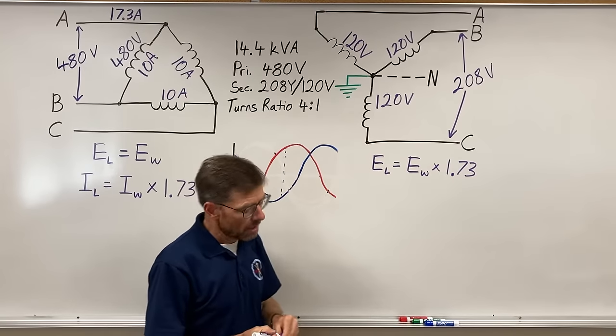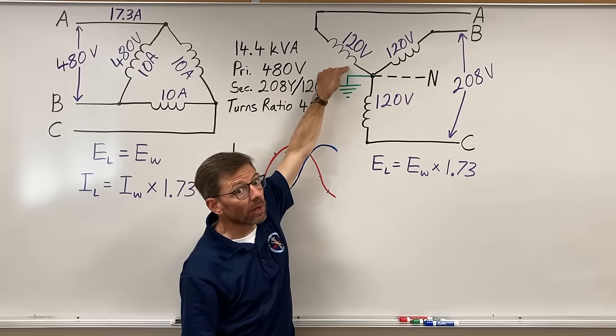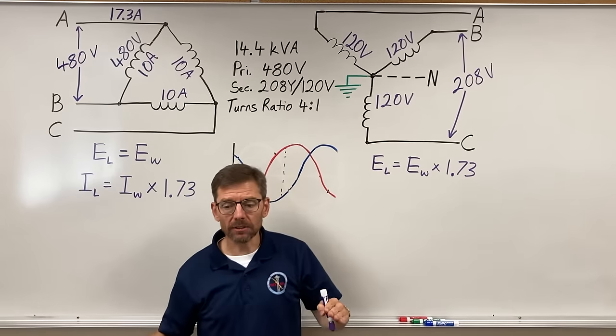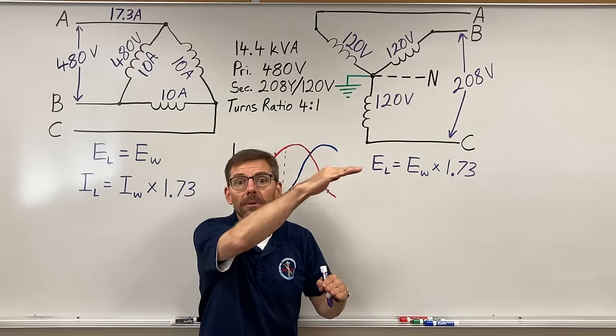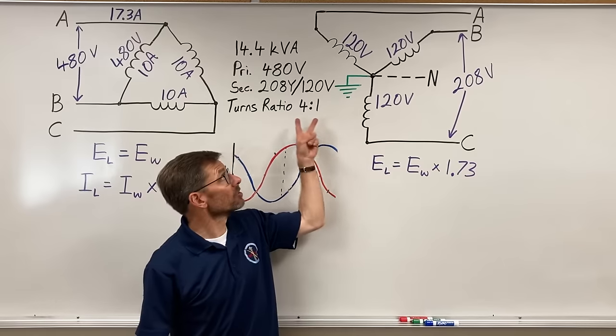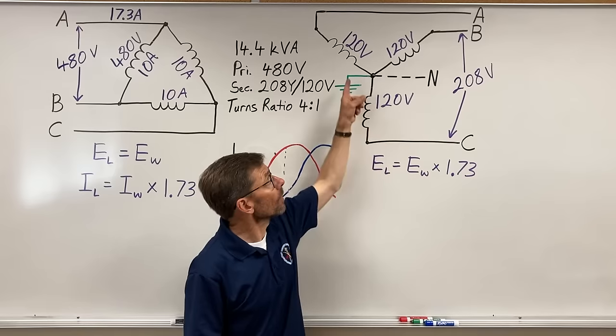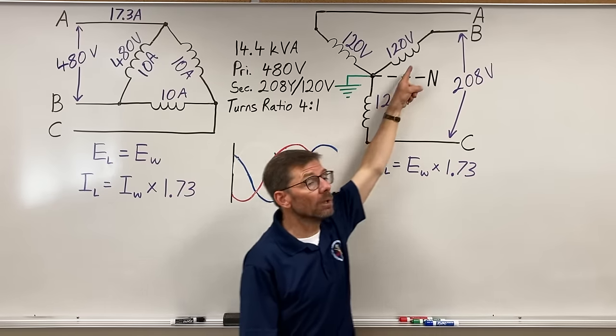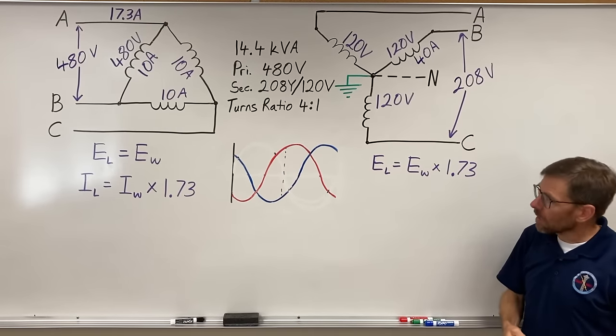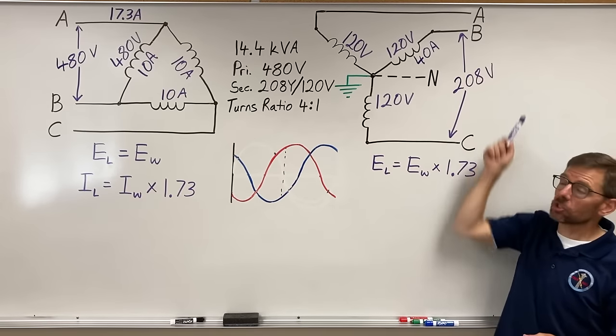Now, what's the current here? If the voltage went down by a factor of four, voltage goes down, current is inverse. That must go up by a factor of four. So 10 amps through the winding. Remember, my turns ratio is talking winding to winding, not line to line. 10 amps here will equal 40 amps through this winding. Now, what's the relationship to the winding current here and how much current goes down each line?